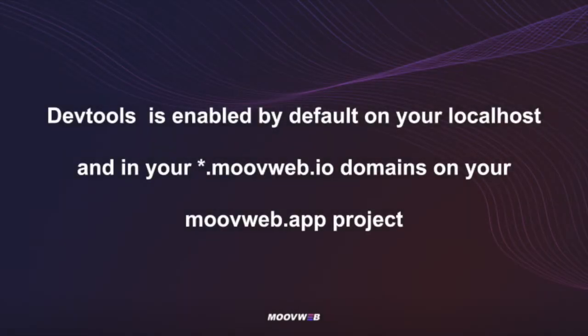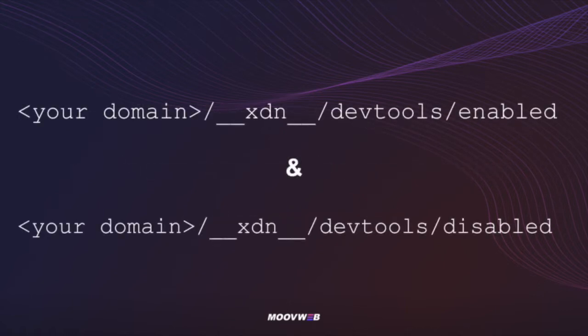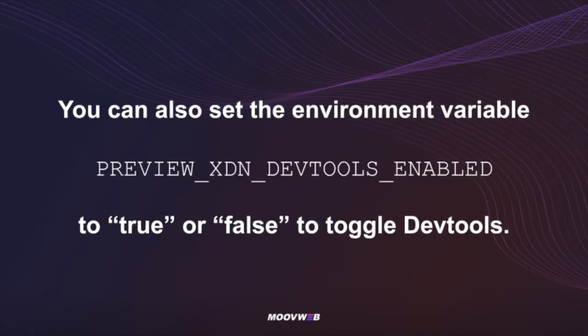By default, DevTools will be enabled on anything served from localhost or any domain ending in moveweb-edge.io. Your project will automatically be given a moveweb-edge.io domain when you first push to the cloud. If you want to toggle DevTools on or off for a specific session, you can simply go to the path xdn/devtools/enabled or xdn/devtools/disabled on your project or local domain. This is also configurable as an environment variable — set it as true or false depending on whether you need DevTools enabled or disabled.